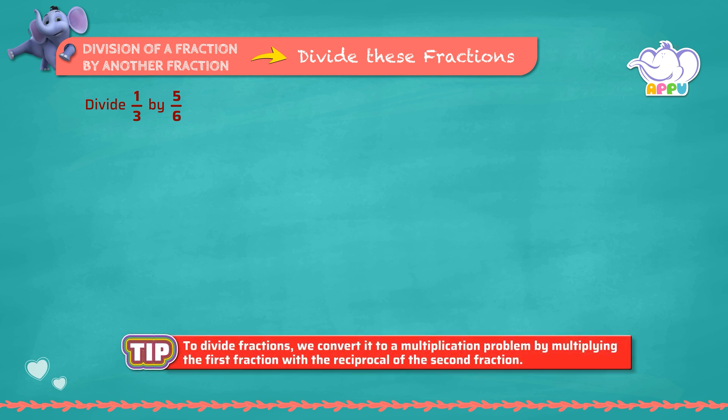We write this as 1 by 3 divided by 5 by 6. Then we multiply the first fraction with the reciprocal of the second fraction.